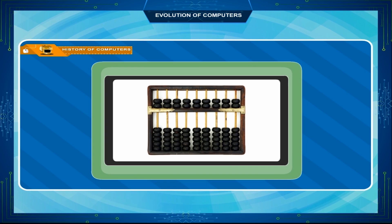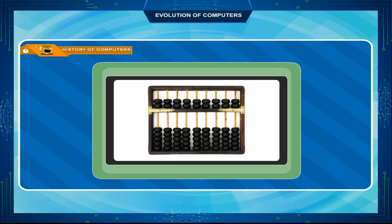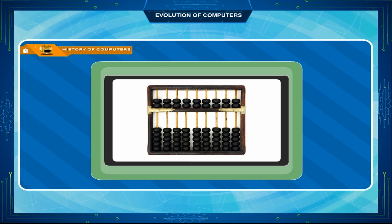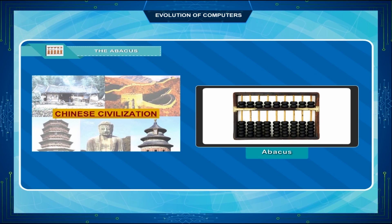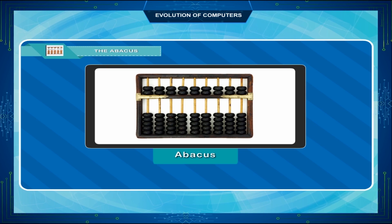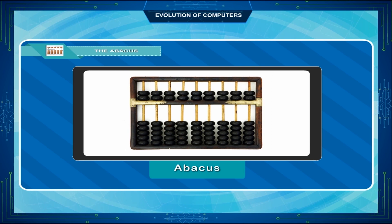This was the predecessor of the first calculating device, known as the Abacus. The Abacus is known to be the first mechanical calculating device, invented about 5000 years ago by the Chinese. It was used to perform addition and subtraction easily and speedily. The Abacus is made up of a wooden frame in which rods were fitted across with round beads sliding on the rods. It is divided into two parts called heaven and earth — heaven was the upper part and earth was the lower one.